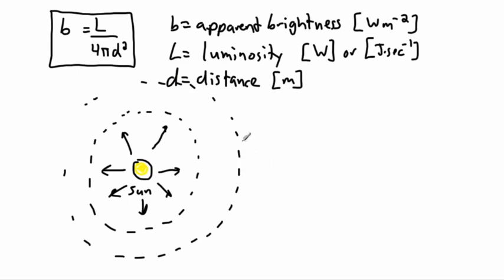So what happens is if we're sitting over here on Earth — this is us — and we receive some of the light, what's being emitted is L, the luminosity. But what's actually being measured on Earth is b, the apparent brightness. You might wonder where did this 4πd² come from? That's actually because this light is being emitted in shells that are spheres.